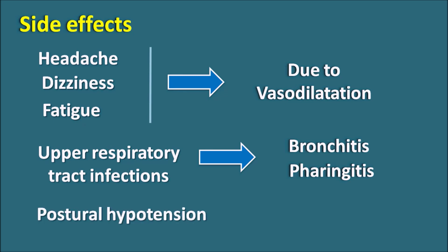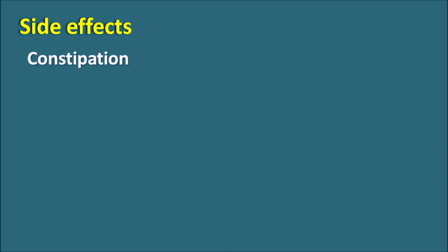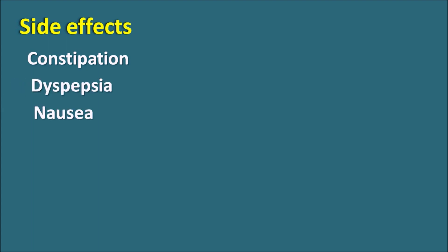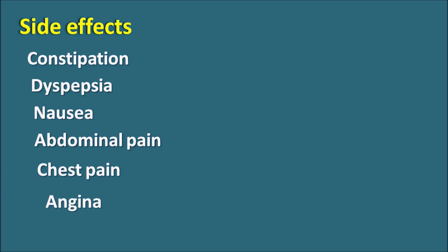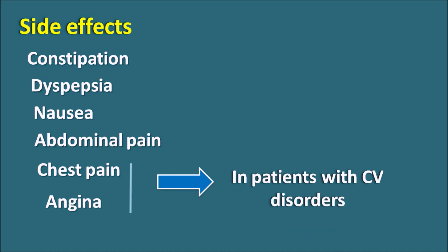Another important side effect is postural hypotension. Alfuzosin can block vascular smooth muscle alpha-1 receptors, resulting in vasodilation and postural hypotension. Other side effects include constipation, dyspepsia, nausea, and abdominal pain on the gastrointestinal system. On the cardiovascular system, it can produce chest pain and may increase angina attacks — so this drug should be carefully given in cardiovascular patients, especially those with pre-existing cardiovascular disorders. This drug can also produce priapism — prolonged erection of erectile tissue causing pain — and edema due to vasodilation.